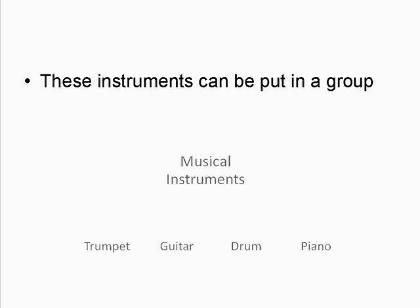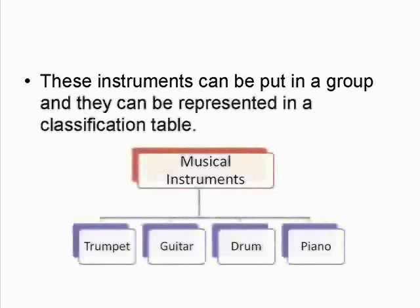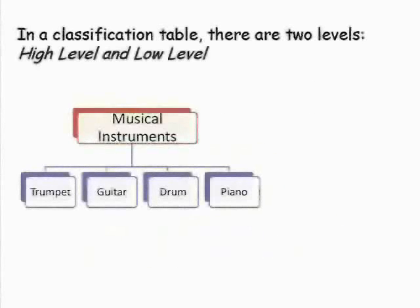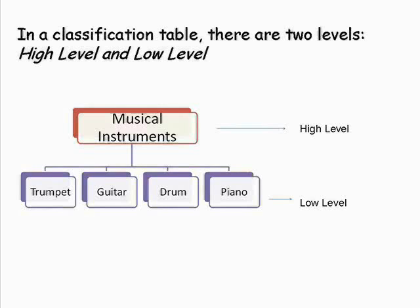These instruments can be put in a group and they can be represented in a classification table. In a classification table, there are two levels: the high level and the low level. In the example below, musical instruments is the high level item — it is the name of the group.